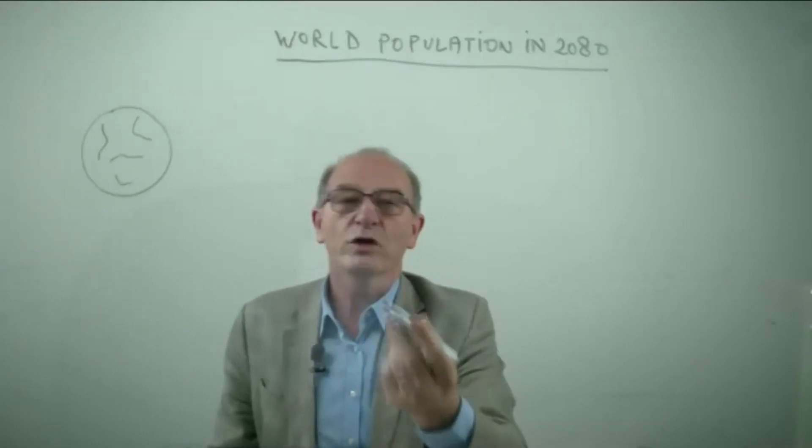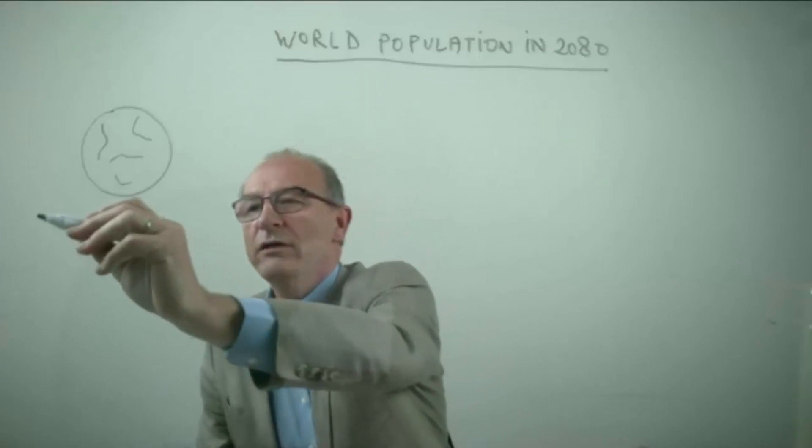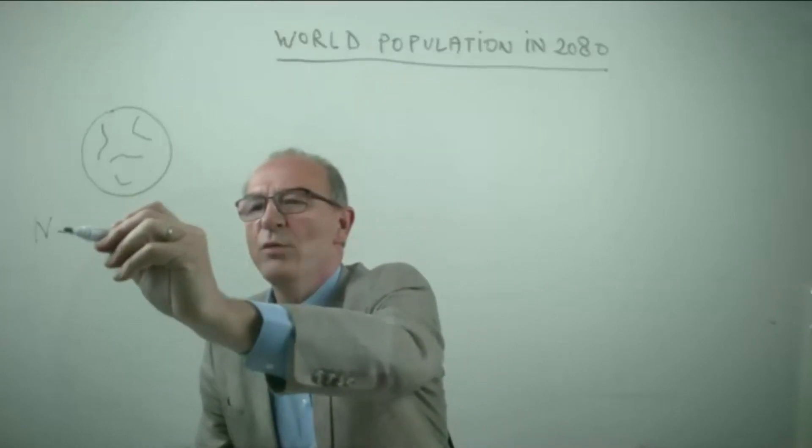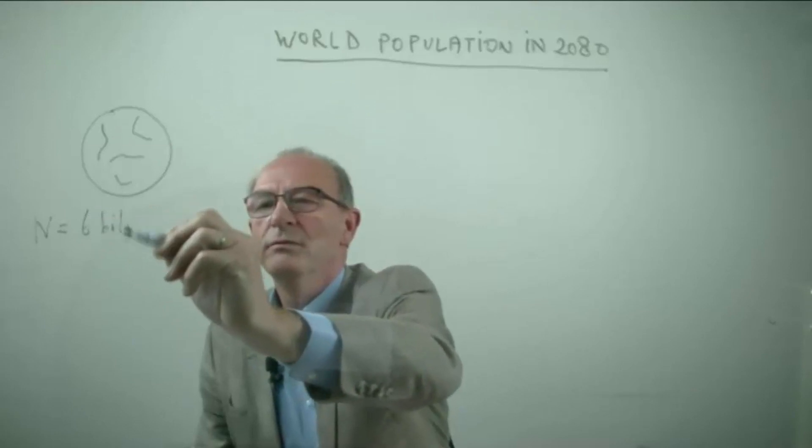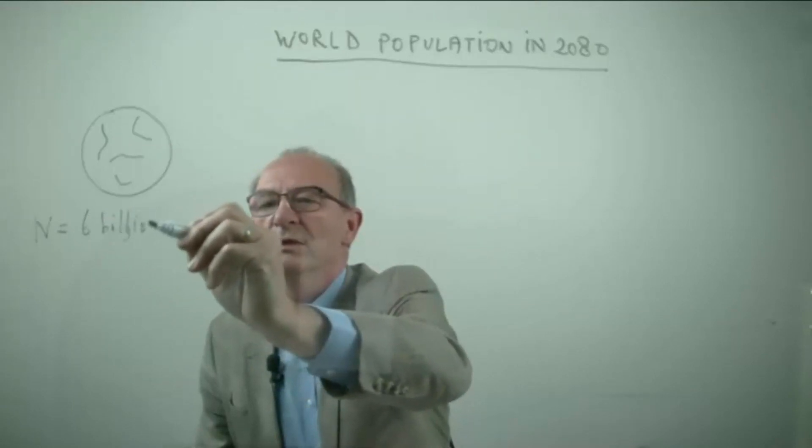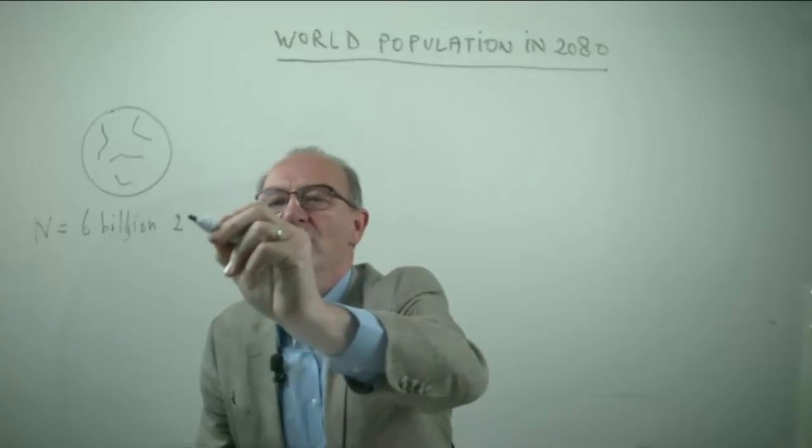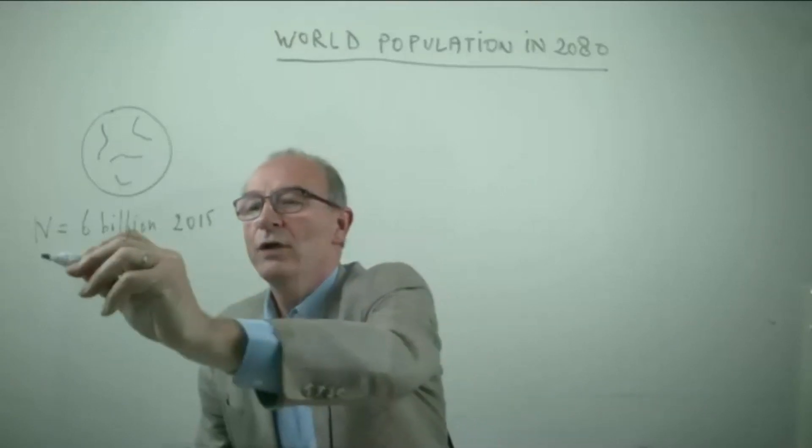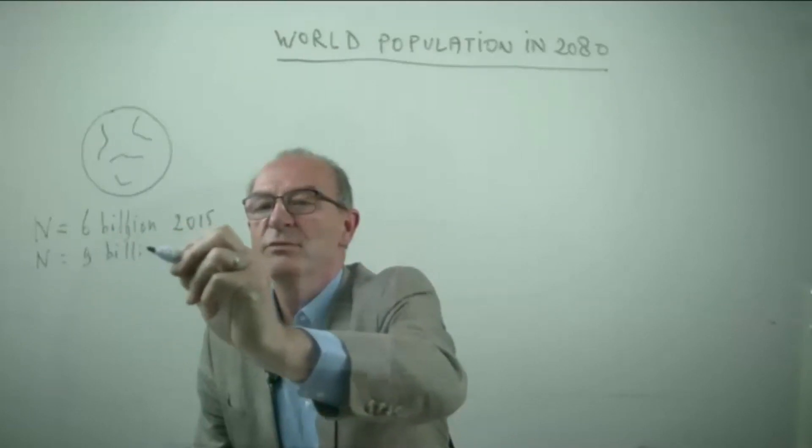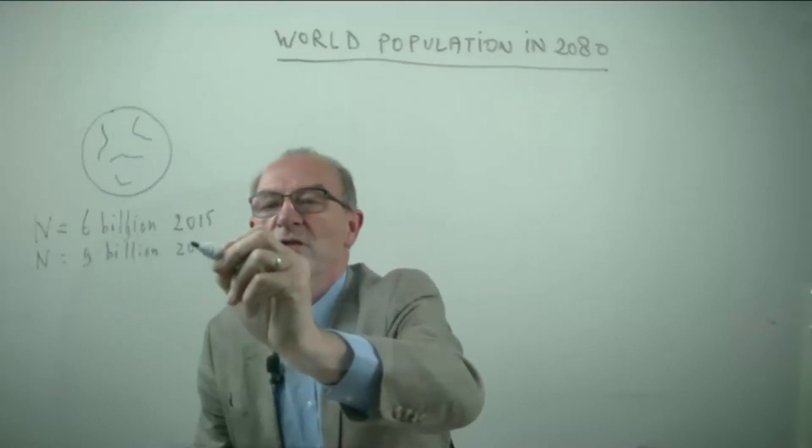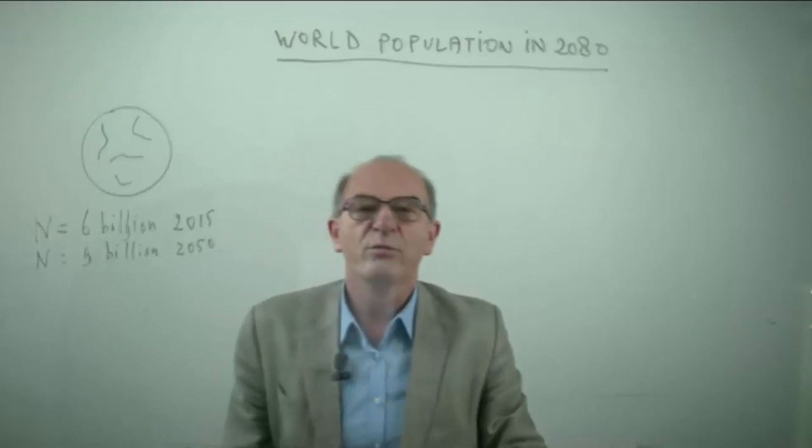Of course we need some information. We know that the number of people at this moment is about 6 billion people, and that's in 2015. And we also know that there are a lot of people who have already estimated this amount, that in 2050 we will be with 9 billion.